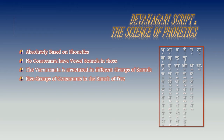There is a nasal sound defined for each bunch which acts as the connector for those letters. The groups are: Ka group, Ch group, Ta group, Ta group, and Pa group. For example, if I have to say a word 'Stambha': half Sa, Ta, half Ma which belongs to the Pa group, and then Bha which belongs to the Pa group. Similarly, 'Kantha' would be Ka, Na of the Ta group, and Ta of the Ta group. So the same group nasal sound has to be the connector.